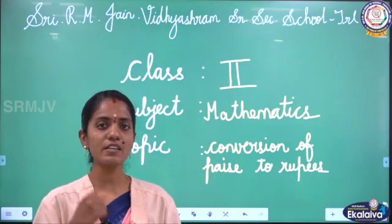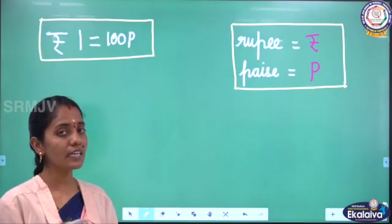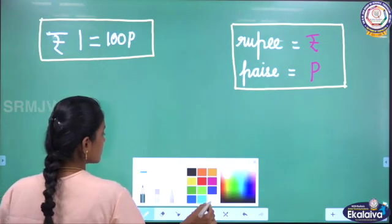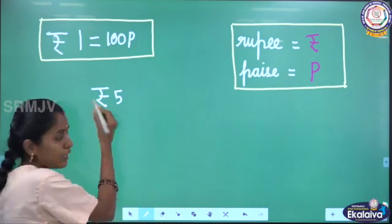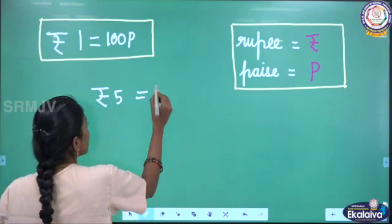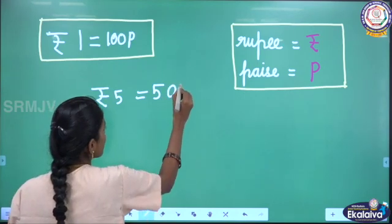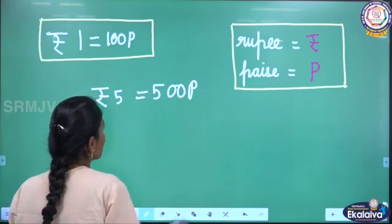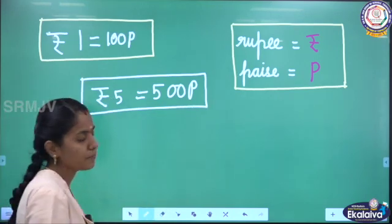Children, in our previous session we have learnt conversion of rupees to peise. Now let's recall: I have 5 rupees. To convert 5 rupees to peise, we have to add 2 zeros on the right, then we have to write the symbol of peise. This is how we convert rupees to peise.